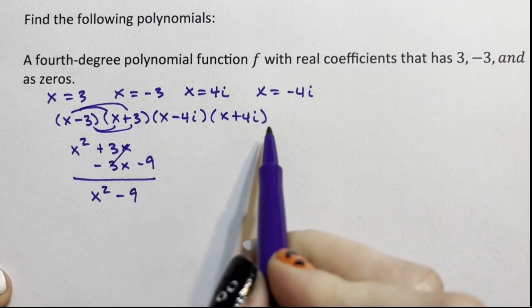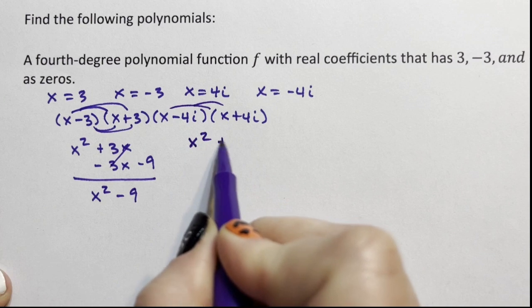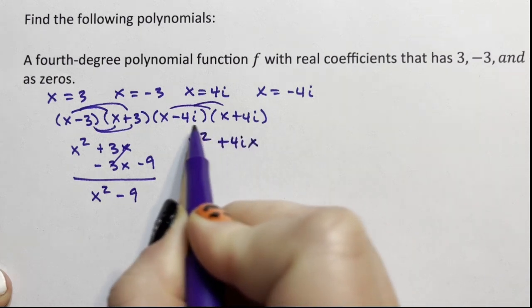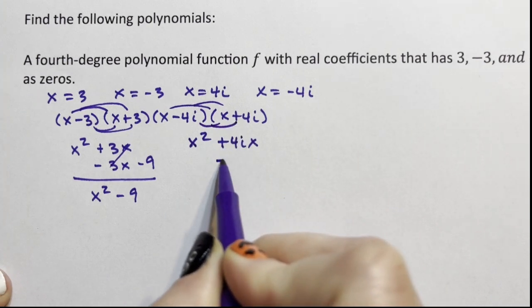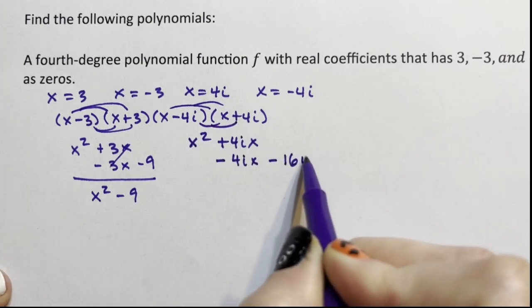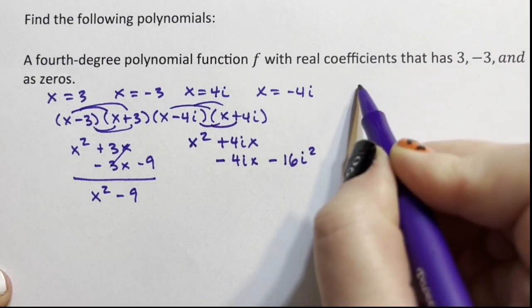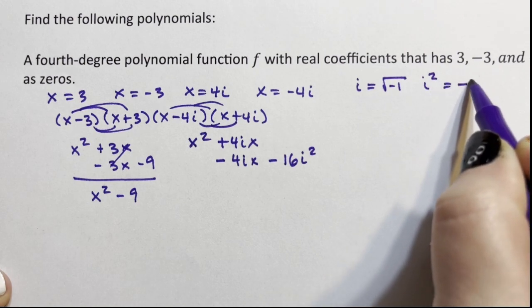Now I'm going to do these two, and it's going to be very similar. I'm going to distribute the x to get x² + 4ix. I'm going to distribute the -4i through to get -4ix - 16i². Note that i = √(-1), and i² = -1.